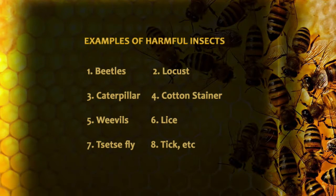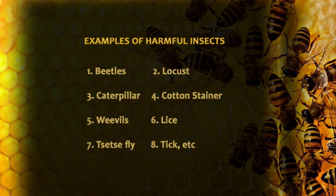Children, let's look at the examples of harmful insects. The examples of harmful insects are: Number one, beetle. Number two, locusts. Number three, caterpillar. Number four, cotton stainer. Number five, weevils. We also have number six, rice weevil. Number seven, tsetse fly. Number eight, tick. And so on.